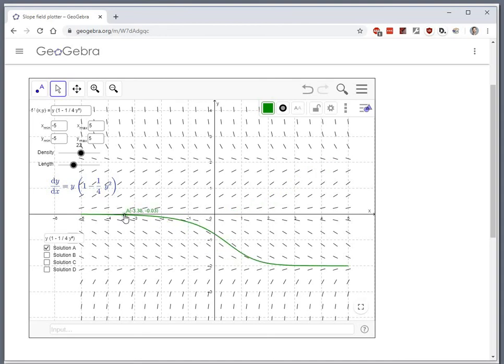If you start at a y value of zero, you have an equilibrium solution at zero. And if you start at any positive y value, you have an equilibrium solution at two.